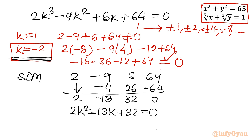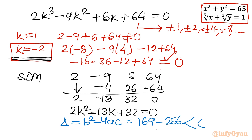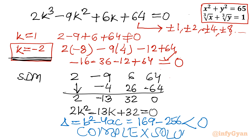Checking only the discriminant of 2k² - 13k + 32 = 0: delta = b² - 4ac = (-13)² - 4(2)(32) = 169 - 256, which is negative. Since the discriminant is negative, only complex solutions arise from this quadratic. We reject this equation since we are calculating real solutions only. The accepted solution is k = -2.